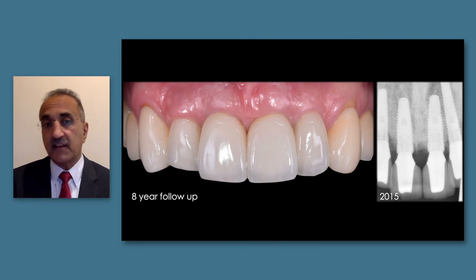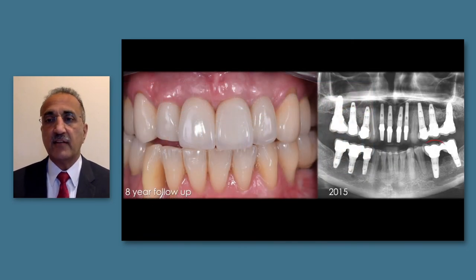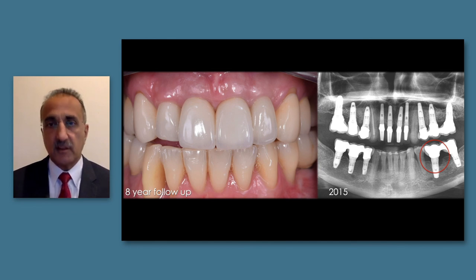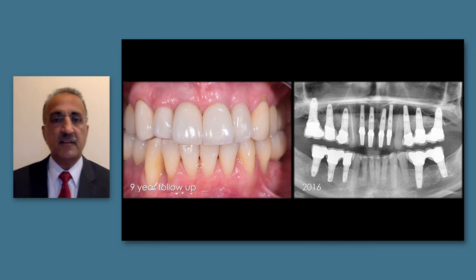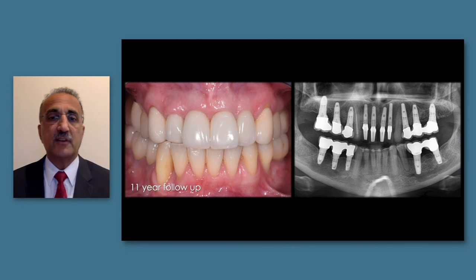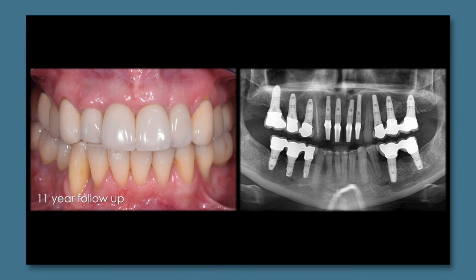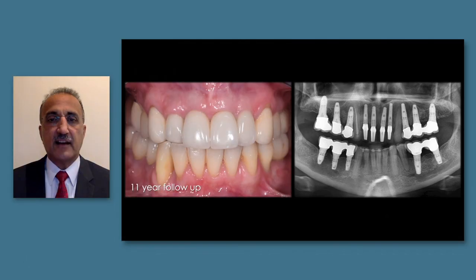In this periodontally compromised case, one area developed peri-implantitis with bone loss around an implant in the mandible. This was treated surgically with open flap debridement and grafting. One year later, there is complete resolution of the defect and a healthy outcome. The 11-year follow-up shows a very good outcome with maintained soft tissue health. The lateral incisor shows thickening of the soft tissue where one of the connective tissue grafts was placed - this sometimes happens - but the result is very acceptable.